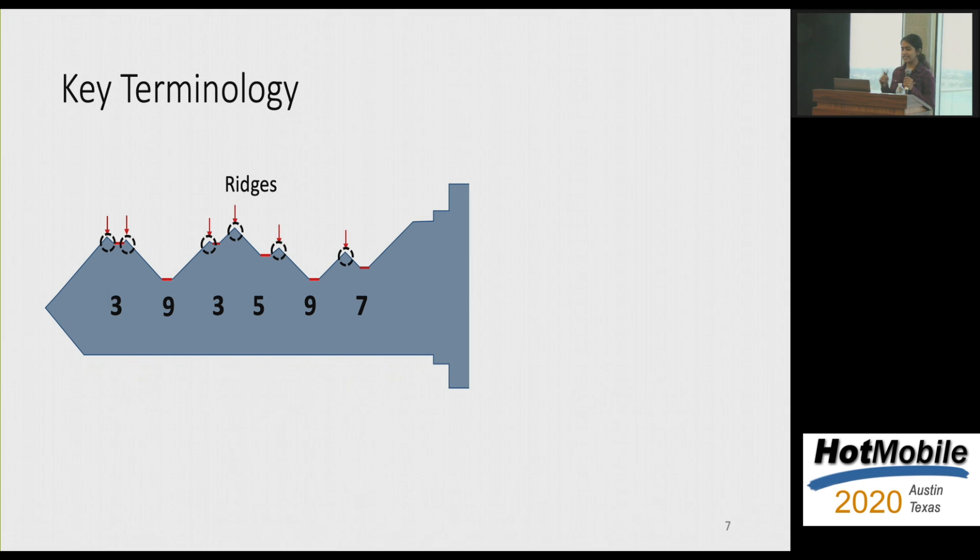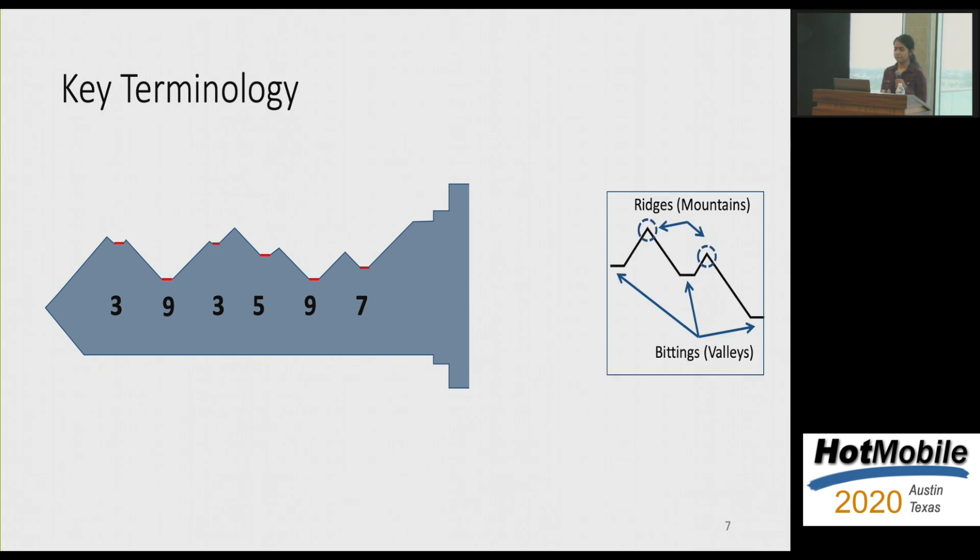So there are also these interesting components in a key, which are these ridges, these edgy intersections between any two bitting positions. And these are very crucial for us because they are the ones which are responsible for the production of sound during key insertion. So a simple way for you to remember these terms is you can think of ridges as mountains and bittings as valleys within the key. So another important number to talk about at this juncture is the key space. So because we have six cut positions and 10 possible values for each, the key space should ideally be 10 power 6. But in reality, it's actually close to half of that. And this is because of additional constraints imposed by manufacturers, where they kind of eliminate certain trivial codes which are easy to duplicate on site.